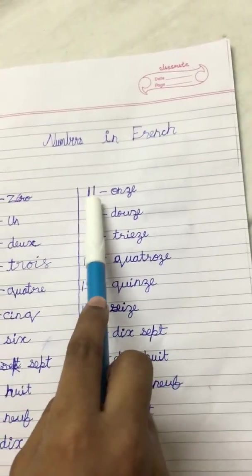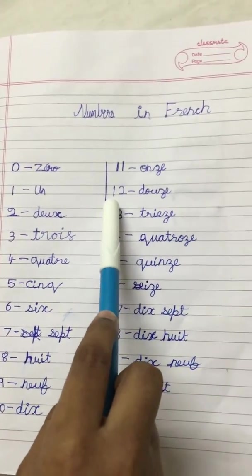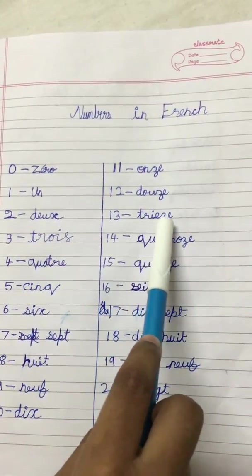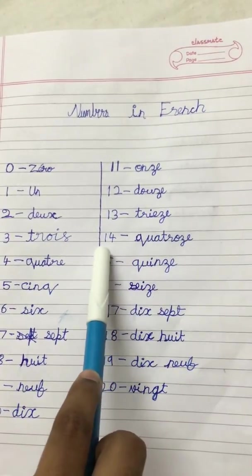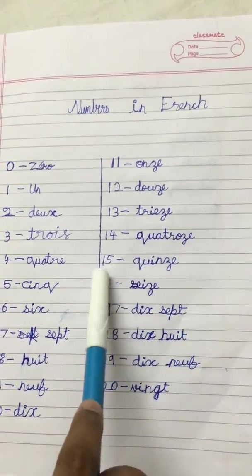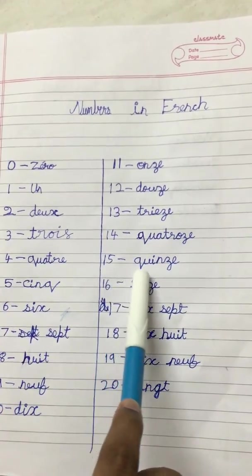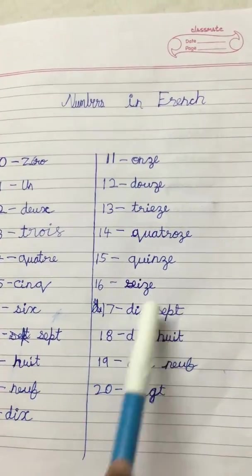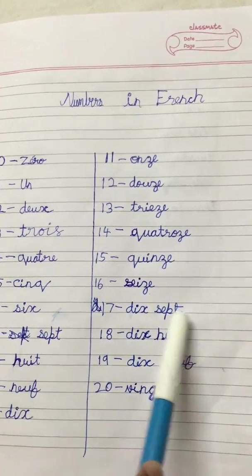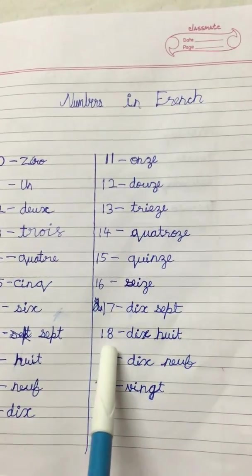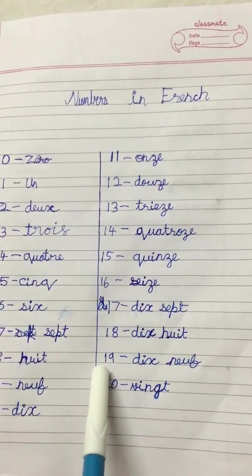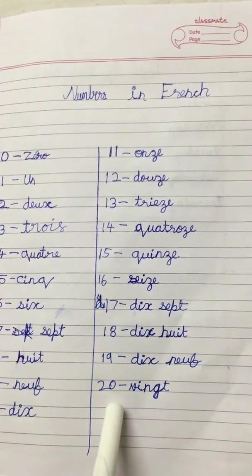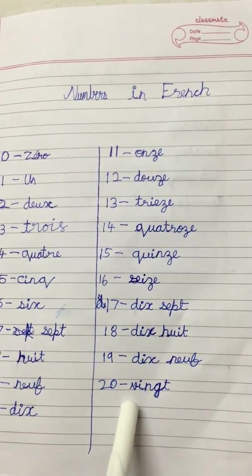11 is called as Ons, 12 is called as Doos, 13 is called as Threes, 14 is called as Quatros, 15 is called as Queens, 16 is called as Seas, 17 is called as Deeksip, 18 is called as Deeksui, 19 is called as Deeksnerf, 20 is called as Vaan.